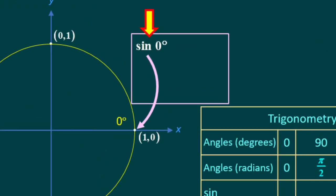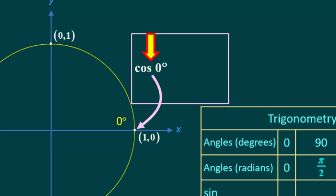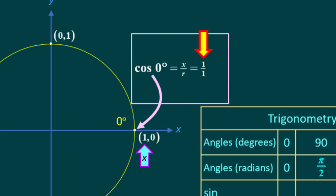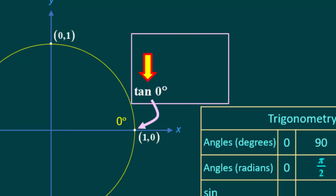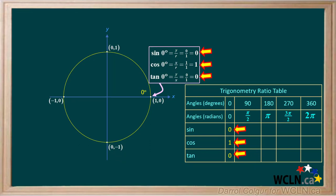We'll start with the sine of 0 degrees. The radius r is equal to 1 for all the angles. The sine is y over r, or 0 over 1, which is equal to 0. The cosine of 0 degrees is equal to x over r, which is 1 over 1, or 1. And the tangent of 0 degrees equals y over x, which is 0 over 1, or 0. We'll record the sine, cosine, and tangent of 0 degrees in our table.